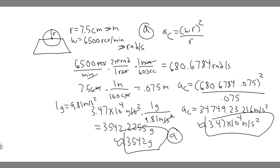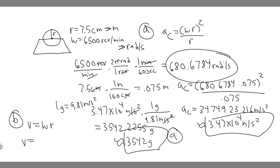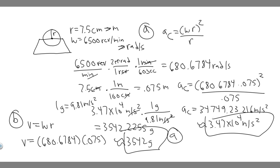For part B, we want the linear speed of a point on its edge. The formula is v equals omega times r. We already know omega is 680.6784 radians per second and the radius is 0.075 meters. So v equals 680.6784 times 0.075, which gives approximately 51.05, or about 51 meters per second. That's the linear speed of a point on its edge.